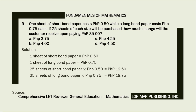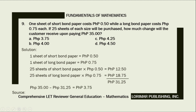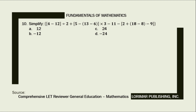We add all the products: 12.50 pesos plus 18.75 pesos equals 31.25 pesos. Lastly, we subtract that sum from 35 pesos: 35 minus 31.25 equals 3.75 pesos. The correct answer is letter A, 3.75 pesos. Problem number 10.